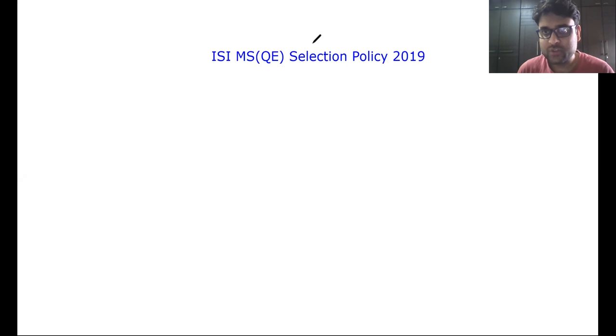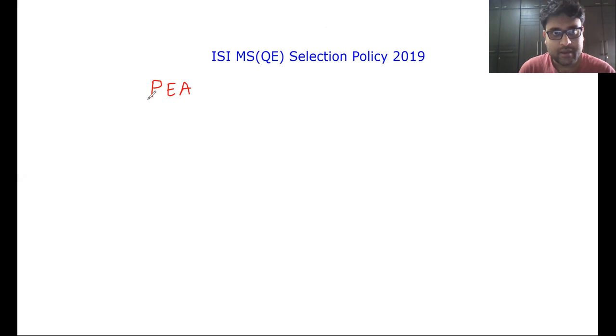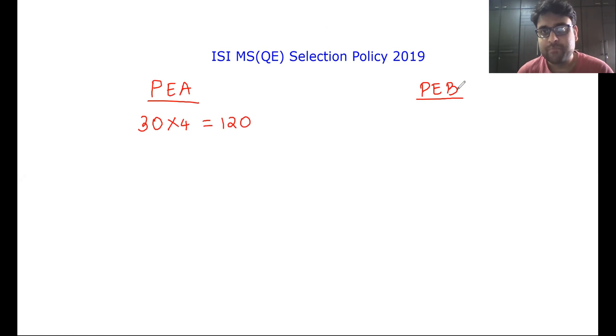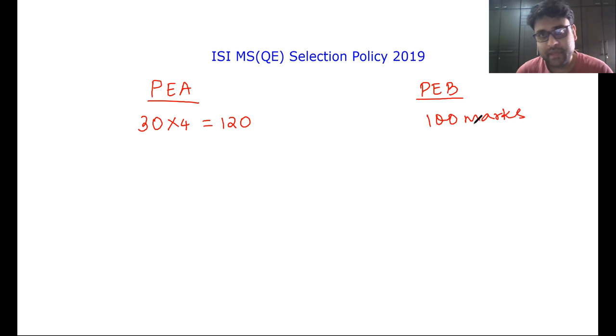So let's assume a few things which will make it easier. This year, in the 2019 entrance examination, ISI MSQE will have two parts. The first part is called PEA and the other part is PEB. PEA will contain 30 questions which will give you a maximum of 120 marks, and PEB, which will be the descriptive part, will be 100 marks.